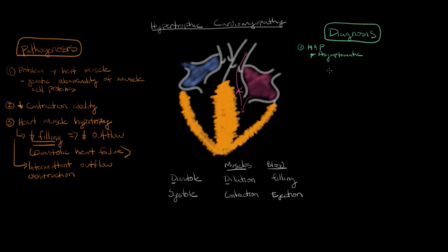If signs are present, some things that might be seen include dyspnea and fainting, known as syncope. Occasionally, the presenting symptom of hypertrophic cardiomyopathy, unfortunately, is sudden death. Since hypertrophic cardiomyopathy is frequently asymptomatic and can have a very serious presenting symptom, it's a condition that's important to screen for, and screening is performed in all young children.